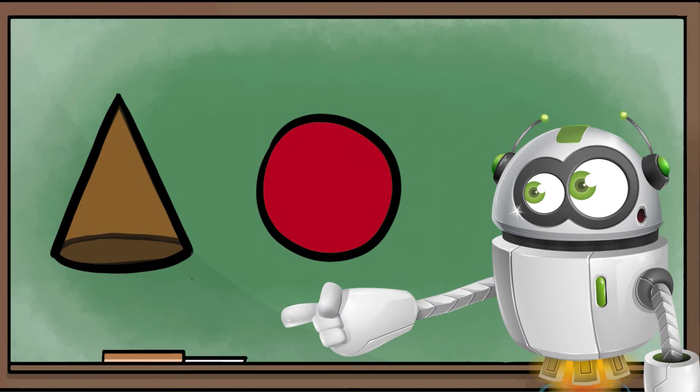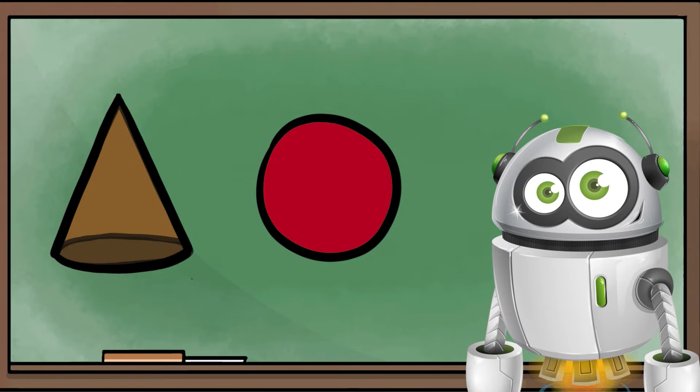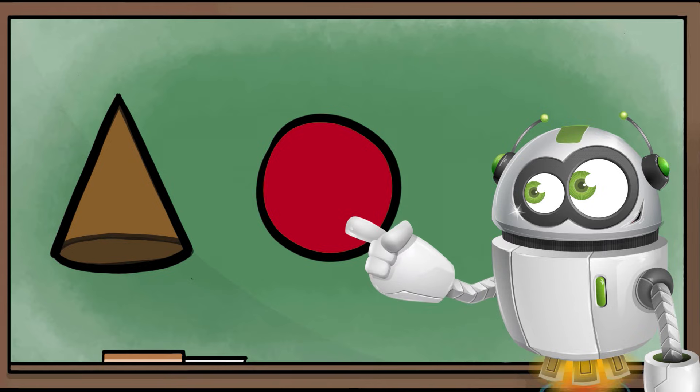Look at these two shapes. One of them is a flat 2D shape. The red circle is the 2D shape.